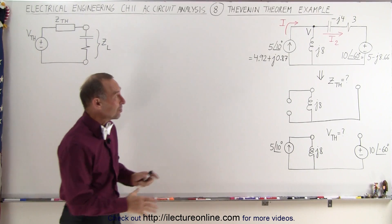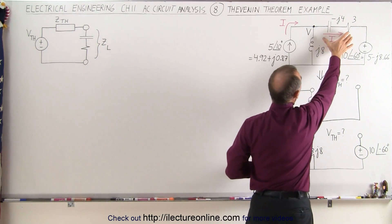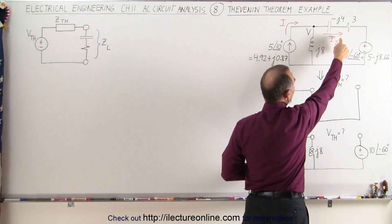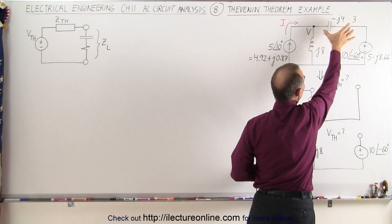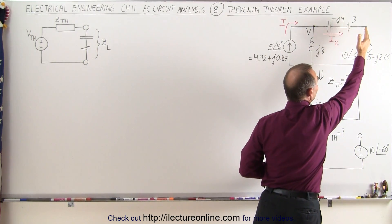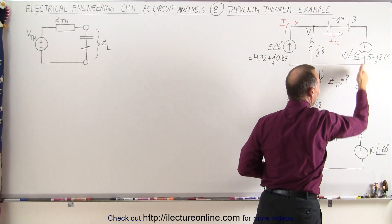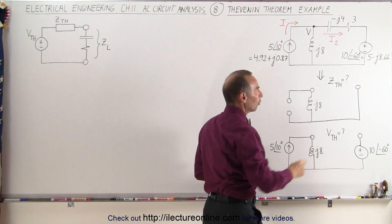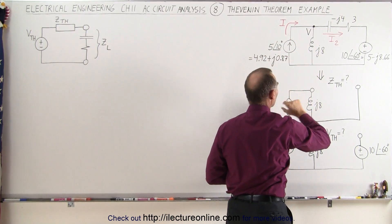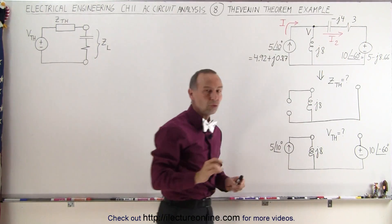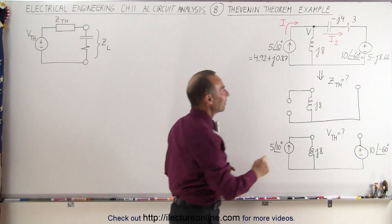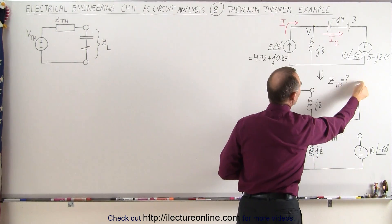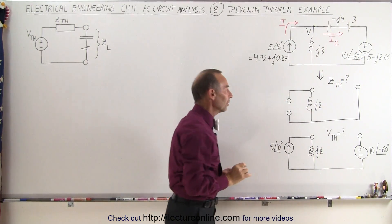The way that works is this: you take your original circuit and you remove the portion, the load impedance, to which you're trying to find the current. We're trying to find I2, so we're going to remove the load resistance. We're going to replace every voltage source by a short, and we're going to take every current source out and leave an open there. So voltage sources become shorts, current sources become opens.